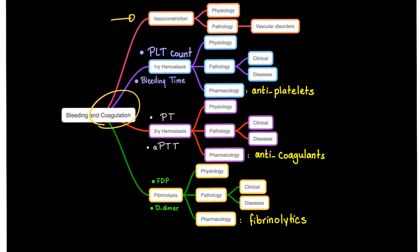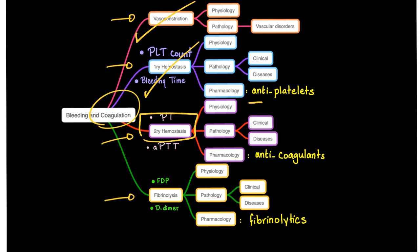Coagulation has four steps: vasoconstriction, primary hemostasis, secondary hemostasis, and fibrinolysis. We are done with vasoconstriction and primary hemostasis. Today we're talking secondary hemostasis — we are still in physiology. In the next video we'll start talking pathology: hemophilia, vitamin K deficiency, etc. Then I'll cover pharmacology — heparin, warfarin, thrombin inhibitors, factor 10 inhibitors, etc.